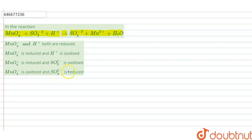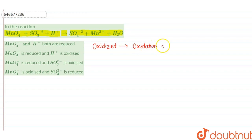In the question, we are given a reaction and we are asked which of the following is getting oxidized or reduced. When a substance gets oxidized, the oxidation state increases. And when it gets reduced, the oxidation state decreases.